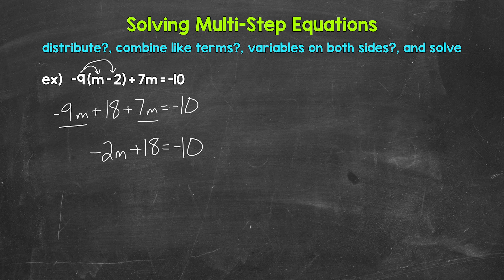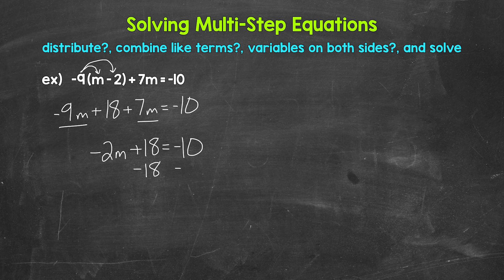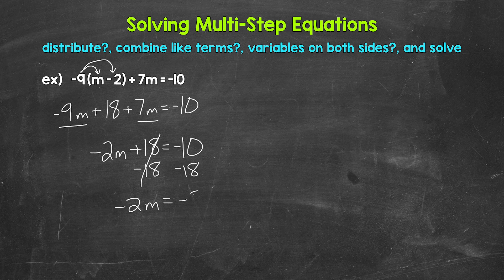Now we can look to solve and isolate the variable. We don't have variables on both sides, so we are good to go. We need to isolate m using inverse operations in reverse order of operations. We need to undo the addition first — the inverse of addition is subtraction. So let's subtract 18 from both sides. On the left side, adding 18 and subtracting 18 cancel out, leaving negative two m equals negative 10 minus 18.